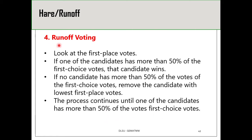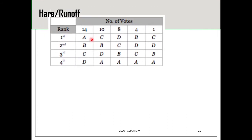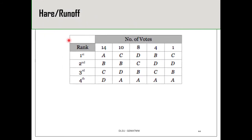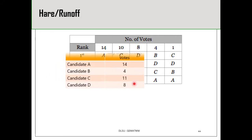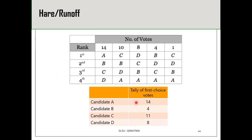Let's illustrate the Hare runoff method with an example. Suppose we have this preferential table. Let's tally the first place votes of candidates A, B, C, and D. Candidate A got 14 first place votes, B got 4, C got 11, and D got 8. None of the candidates received more than half of the first place votes.